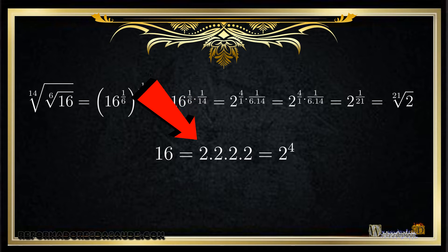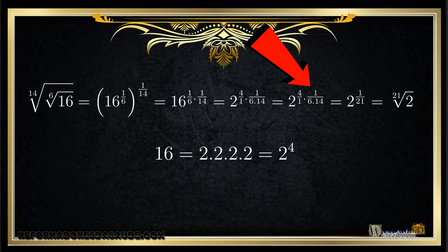Remembering that 16 is 2 to the 4th, that is 2 times 2 times 2 times 2, we have 2 to the 4th. So we multiply the exponent by 4, and doing this calculation we have the value of 1 divided by 21, which results in root 21 of the value 2.